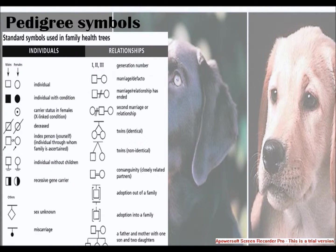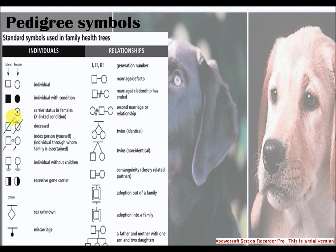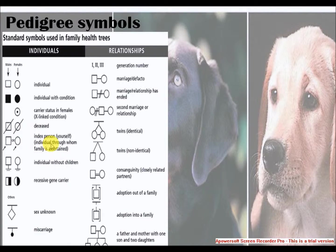Pedigree symbols. This is a male, female. This is an individual with a condition, a carrier status, a female with a condition. This is a deceased individual.